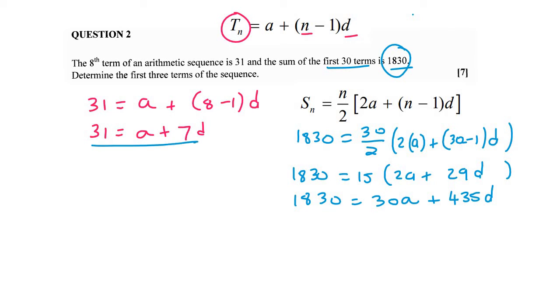Now all that happens is we have two equations, two unknowns solved simultaneously. Easy, right? So I'm going to take this one, and there are other ways. You can do it differently. I'm going to take this A and get it by itself. So that's going to be 31 minus 7D.